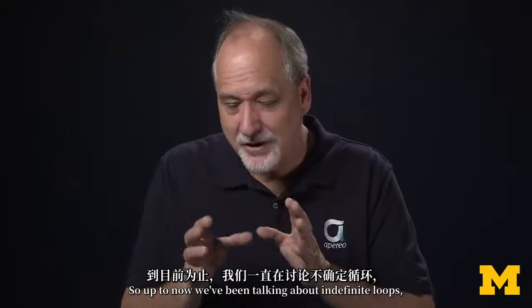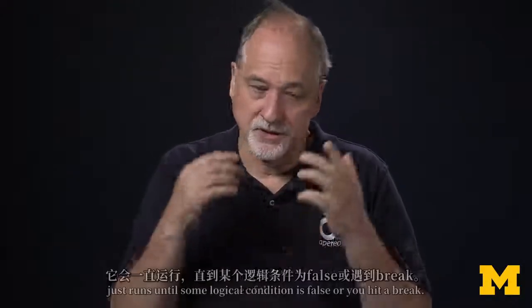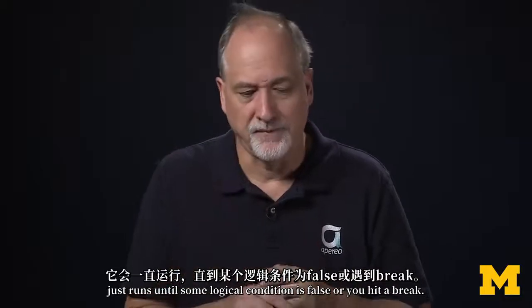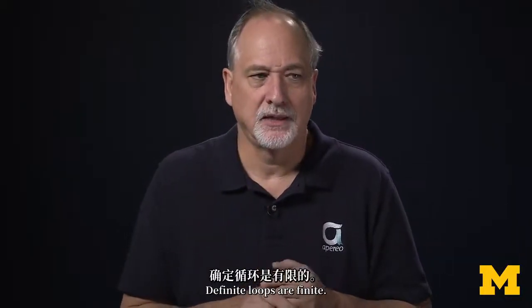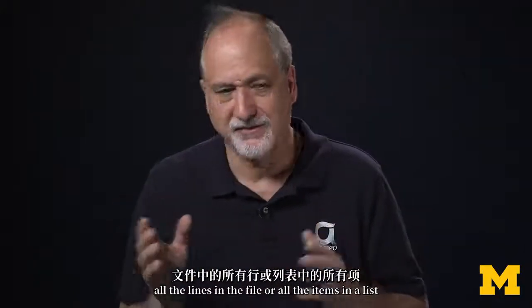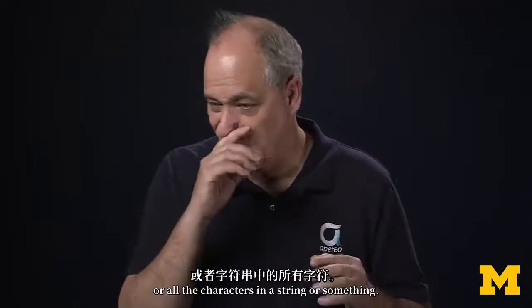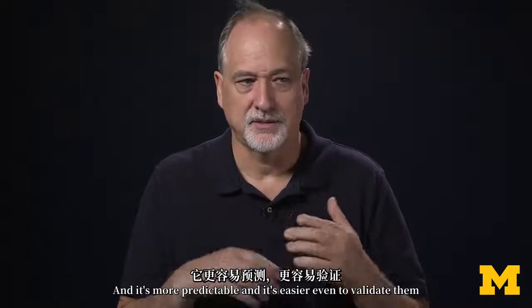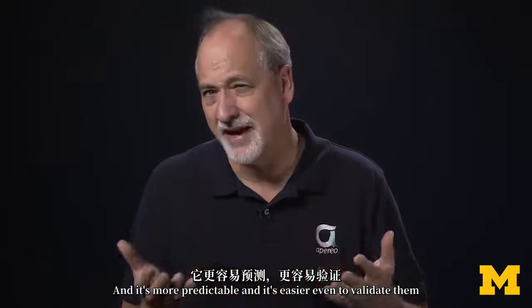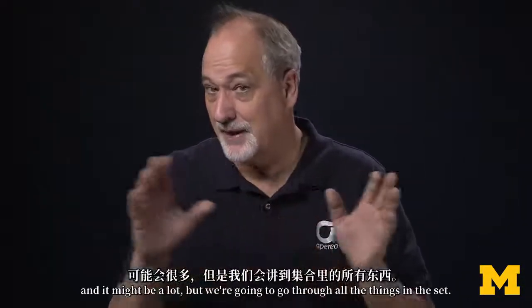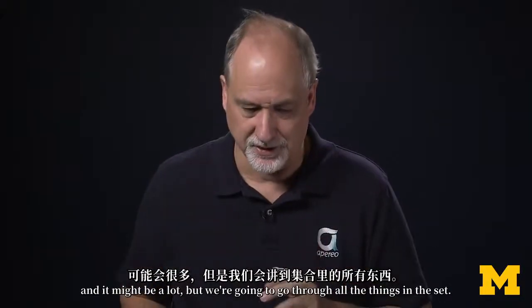So up to now we've been talking about indefinite loops and that's the use of the while keyword that just runs until some logical condition is false or you hit a break. Definite loops are finite. They are going over all the lines in the file or all the items in a list or all the characters in a string or something. We use the for construct and it's more predictable and easier to validate because we have a set of things that we're going to go through.